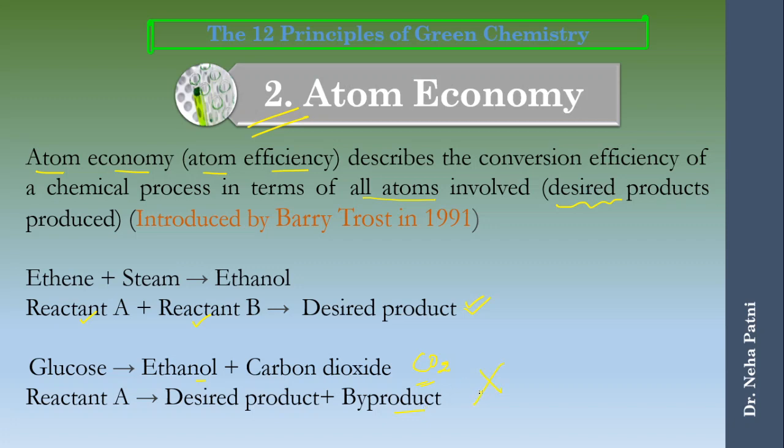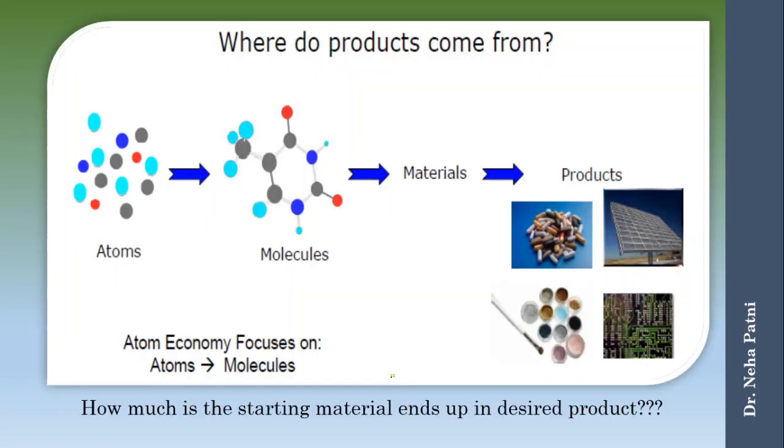This type of equation is not desirable as per principle number two atom economy. It says that your desired product percentage should be more and there should not be any byproduct. Every atom needs to be converted into molecule so that it ends up in the product. Each and every atom needs to be utilized whatever is your starting material.